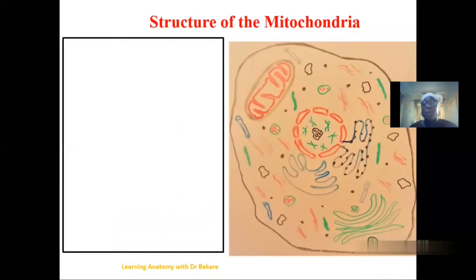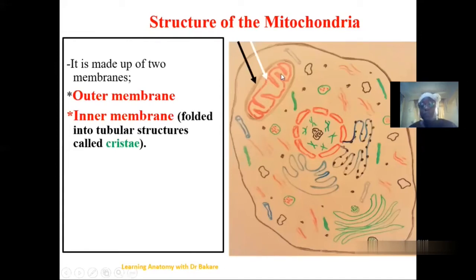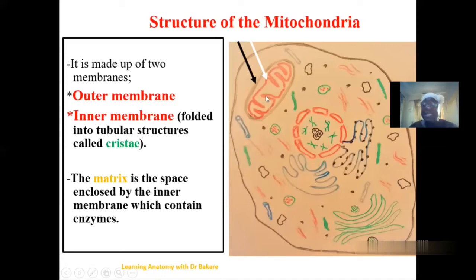Looking at the structure of the mitochondria: it is made up of two layers. The outer layer appears smooth, while the inner layer appears convoluted — thrown into folds referred to as the cristae. Within the inner compartment of the mitochondria, we have the space referred to as the matrix, which is filled with enzymes used to produce energy in the form of adenosine triphosphate, or ATP. The inner layer being thrown into folds serves to increase the surface area for the production of ATP.